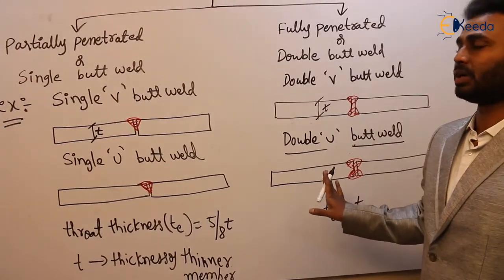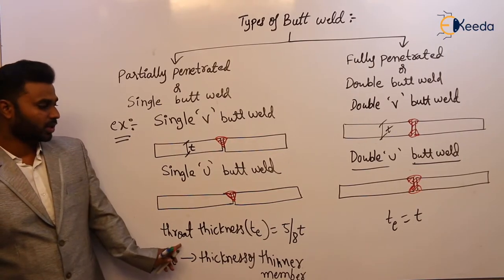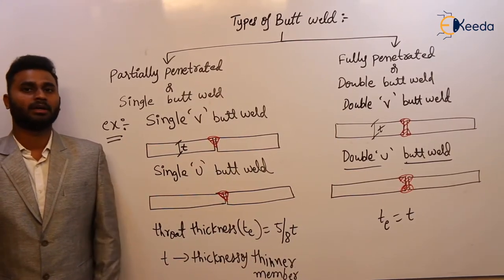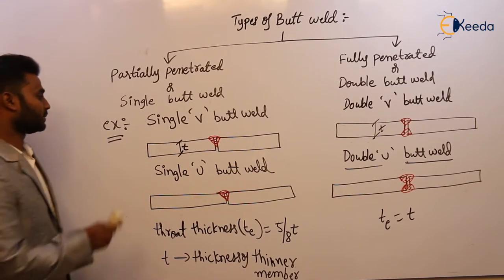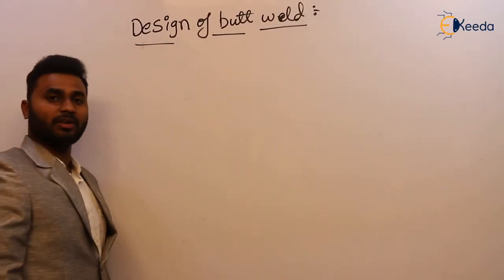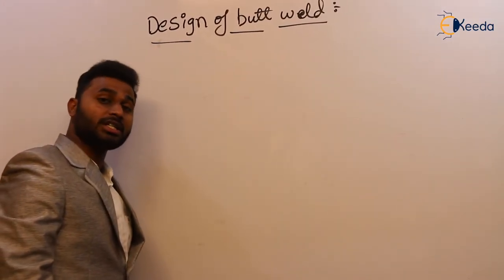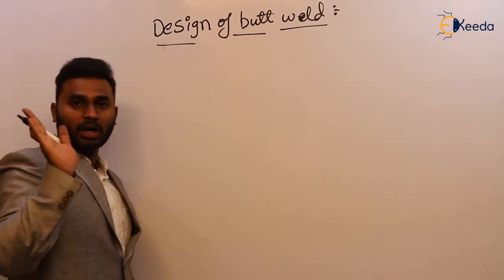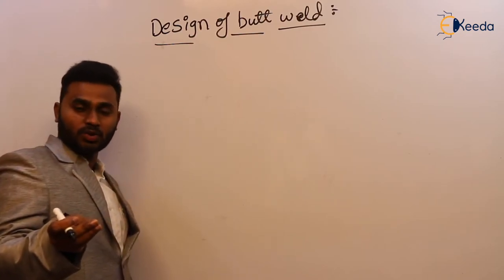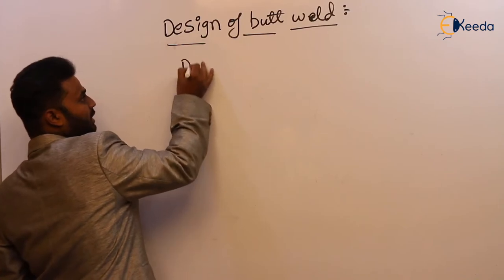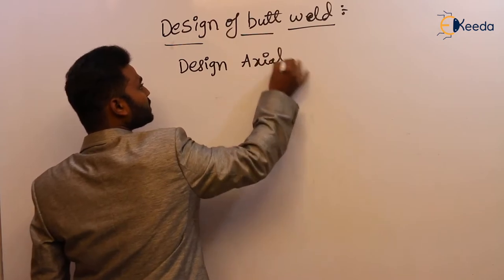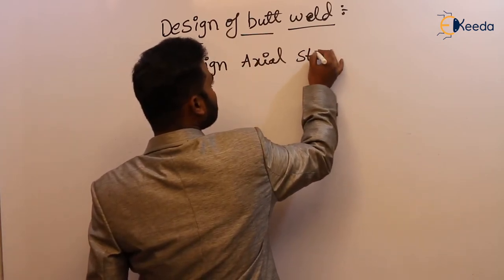The important provisions regarding butt weld: throat thickness is 5/8 of T_E, and effective length is simply the width of the connecting member. Now let us see the design of the butt weld. As discussed in the introduction, butt weld is subjected to axial force in addition to shear. So we need to design it for both. First: design axial strength of butt weld.